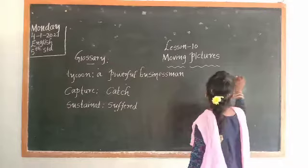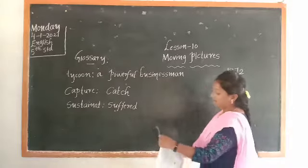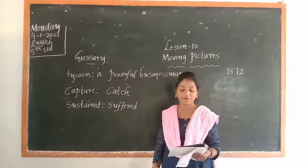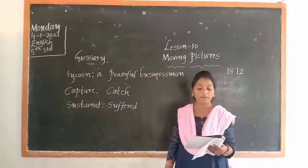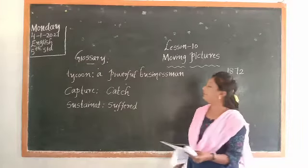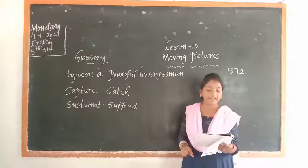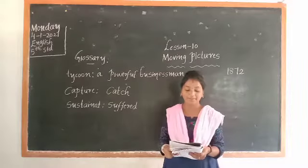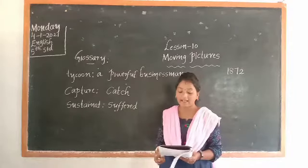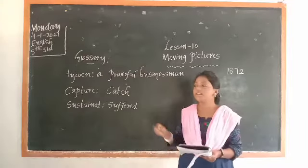Here in 1872, the California railroad tycoon and race horse breeder Stanford had an argument over whether a galloping horse ever has all four hooves off the ground or not. Experts and artists agreed that the hooves of horses always kept at least some contact with the ground.